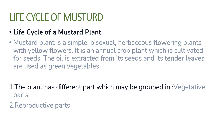In this video lecture, I will briefly talk about the life cycle of the mustard plant. The mustard plant is a simple bisexual herbaceous flowering plant with yellow flowers.